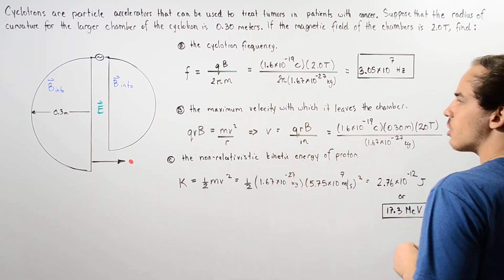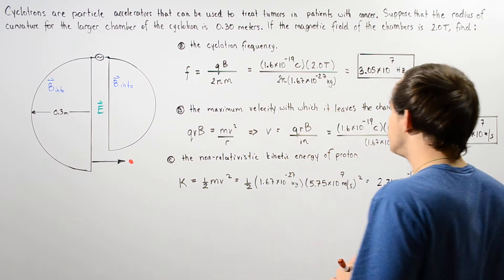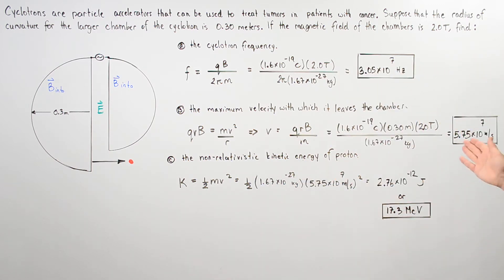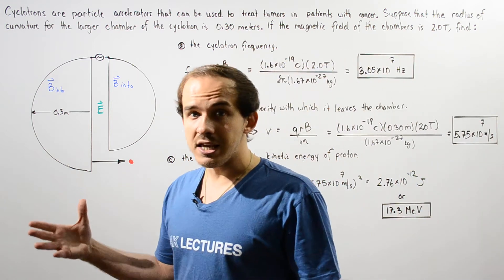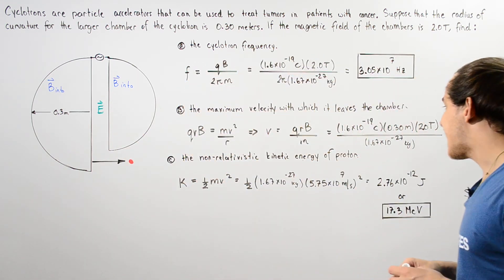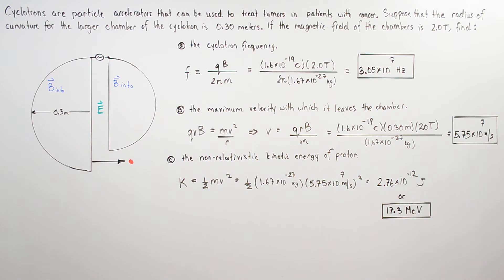So once again we plug in our mass, we plug in our q, we plug in our r which is 0.3 meters, and plug in our B. We get that the maximum velocity with which our proton leaves that chamber of the cyclotron is 5.75 × 10⁷ meters per second.